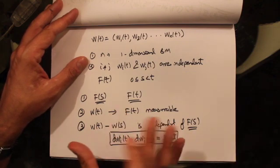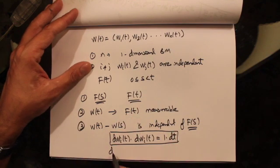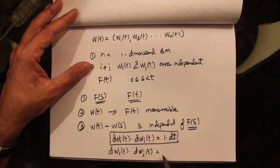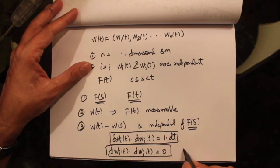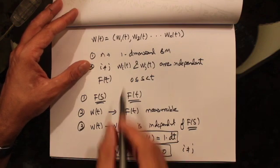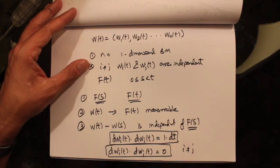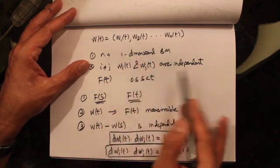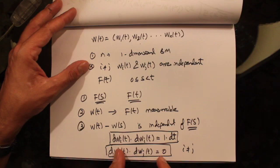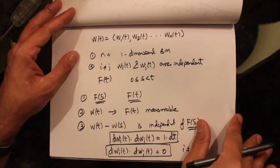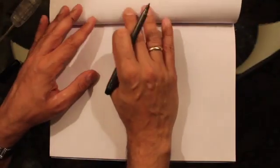We can also calculate the cross variations: dW_i(t) · dW_j(t). I'll show you that this equals zero, provided i is not equal to j and these Brownian motions are independent of one another. If they are independent, then the cross variation equals zero, and I'm going to show you that result in just a moment.